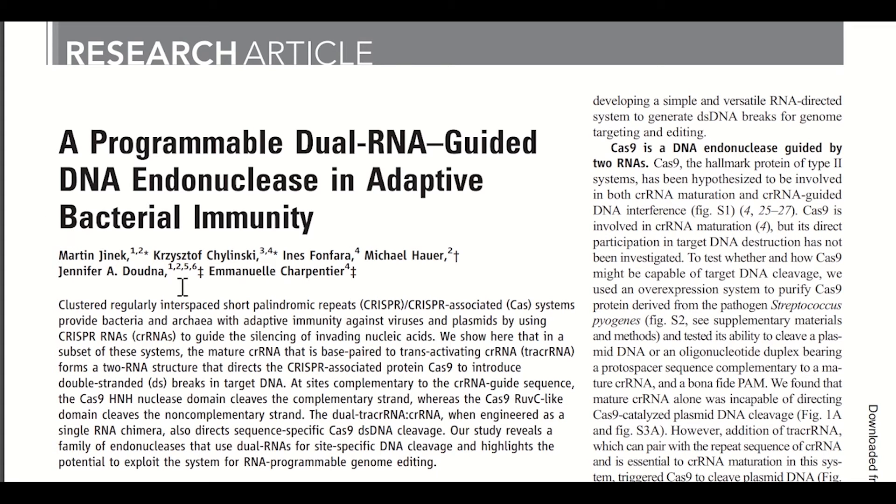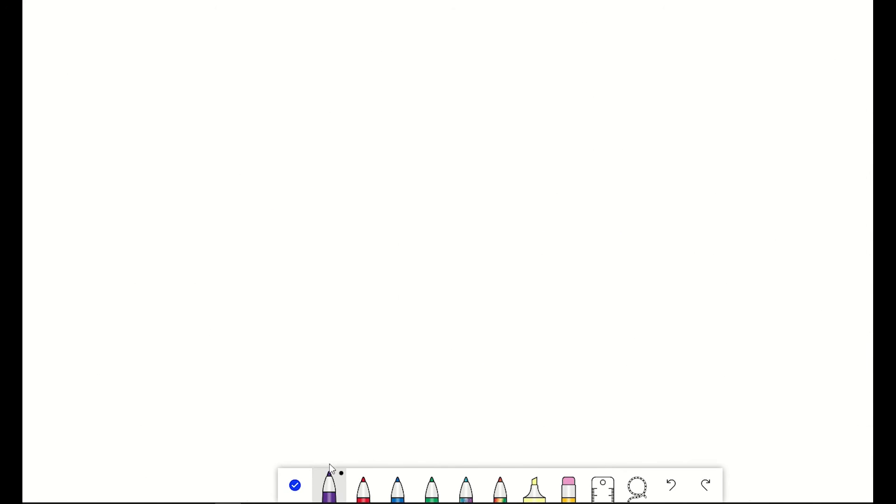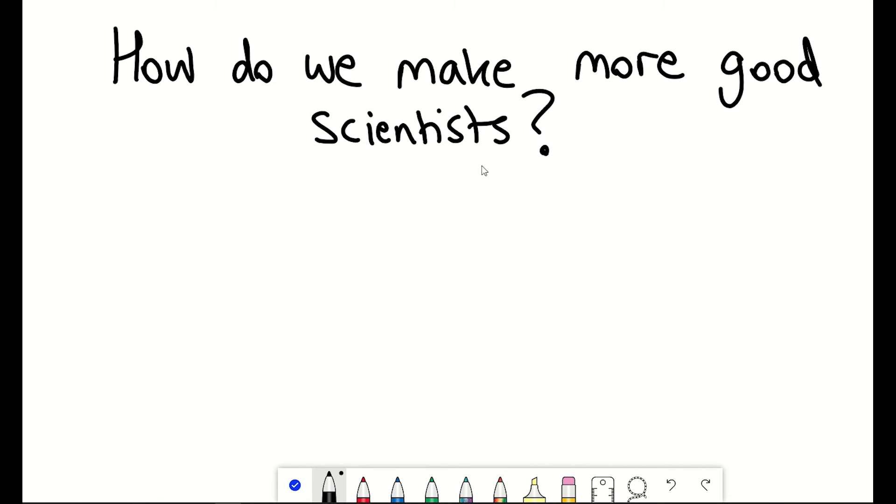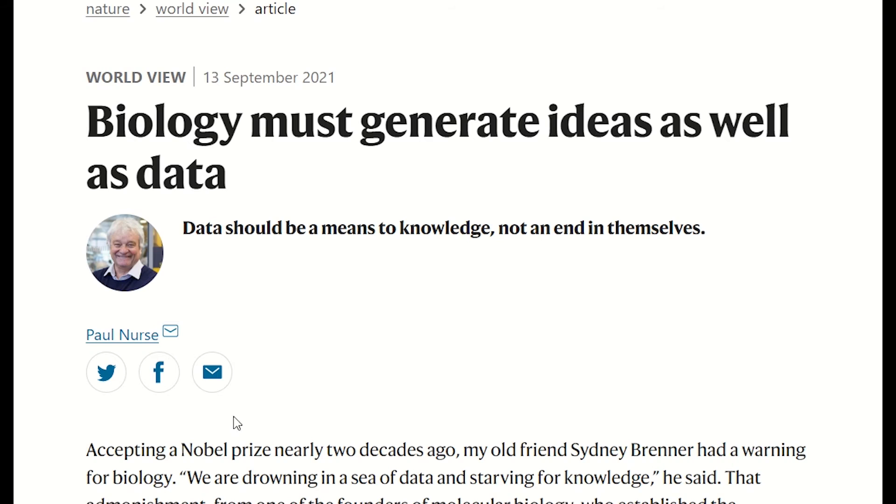And so that brings us to today. And how do we go about making more good scientists? Well, we have many tools at our disposal these days, such as CRISPR, proteomics, genomics, metabolomics. Fancy microscopes.